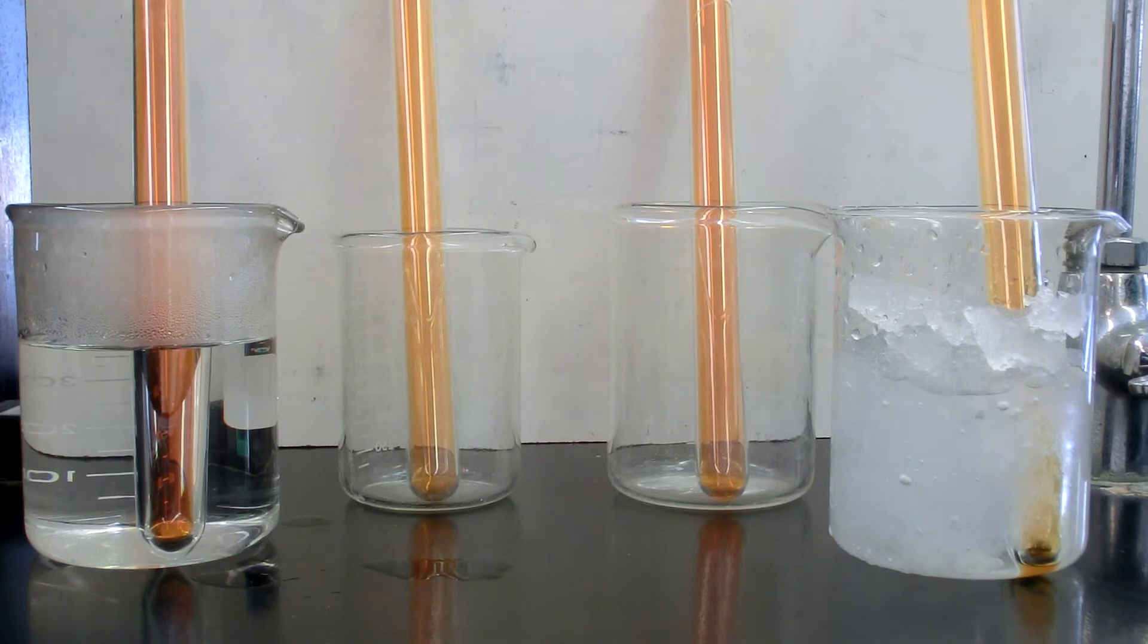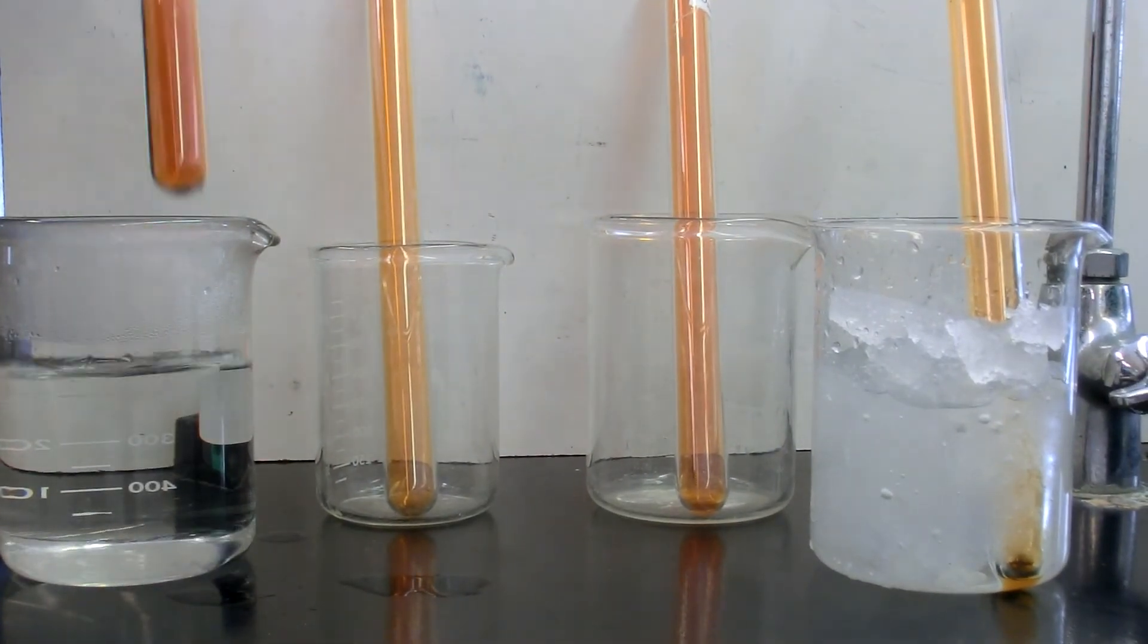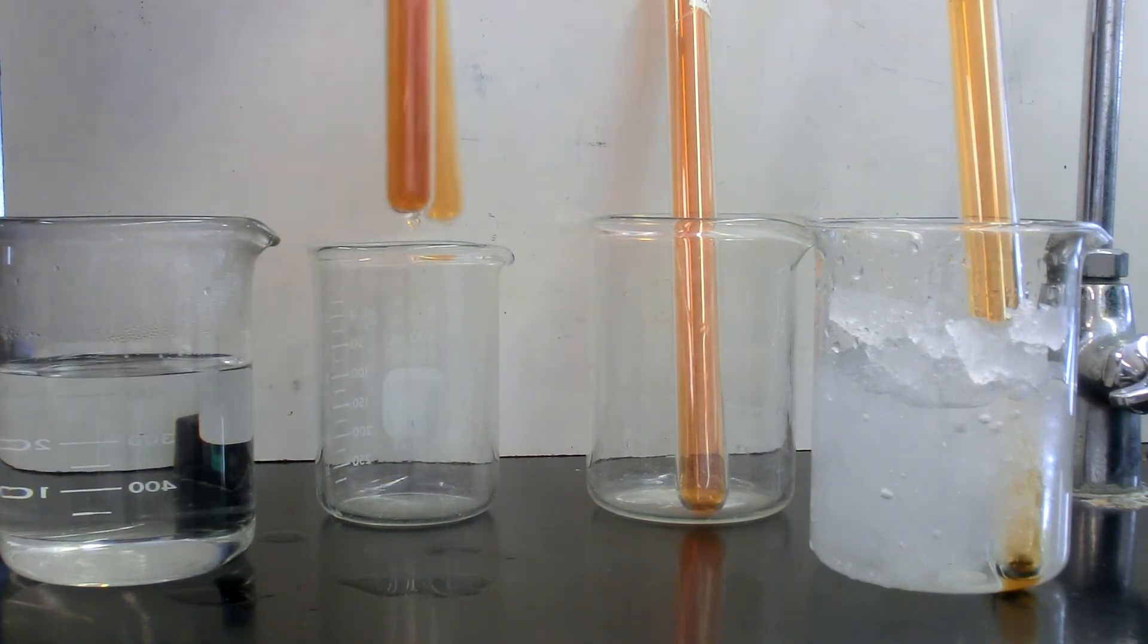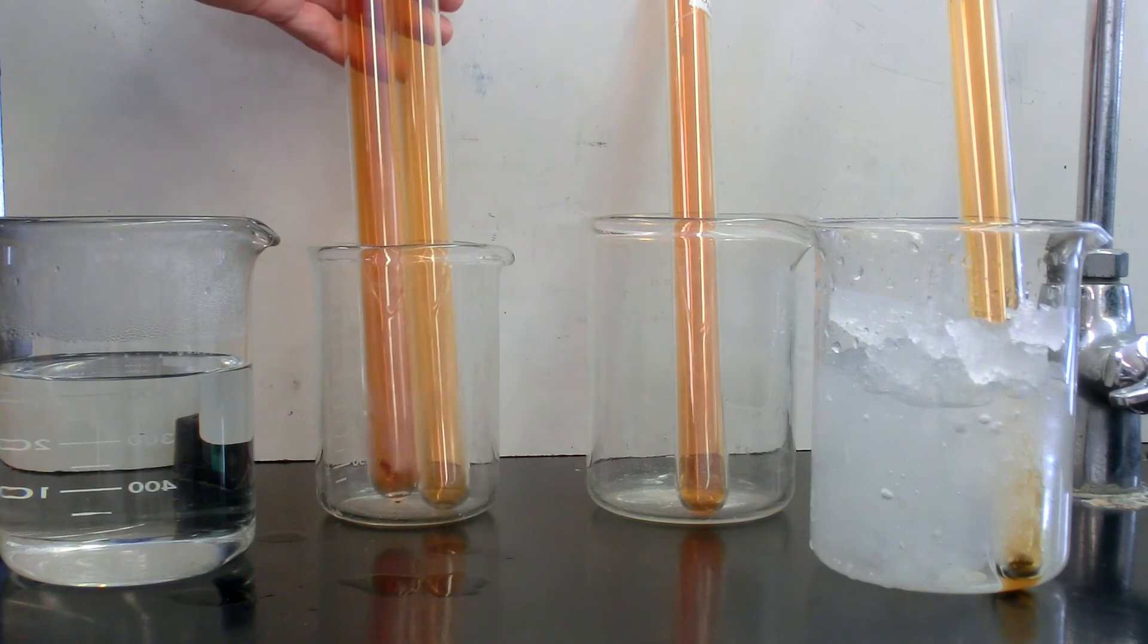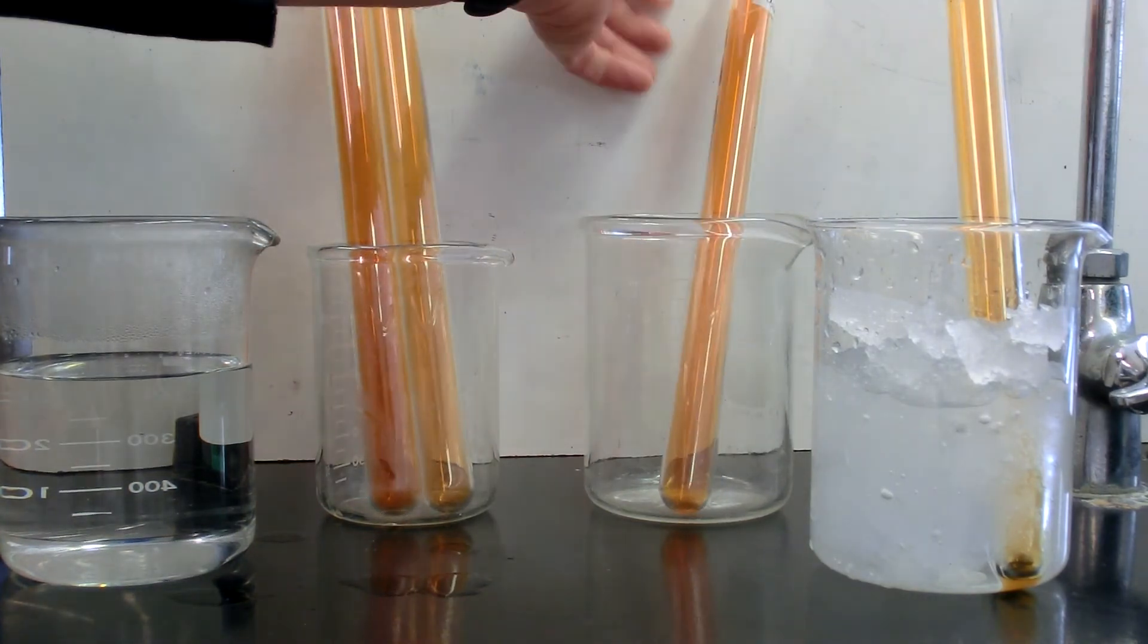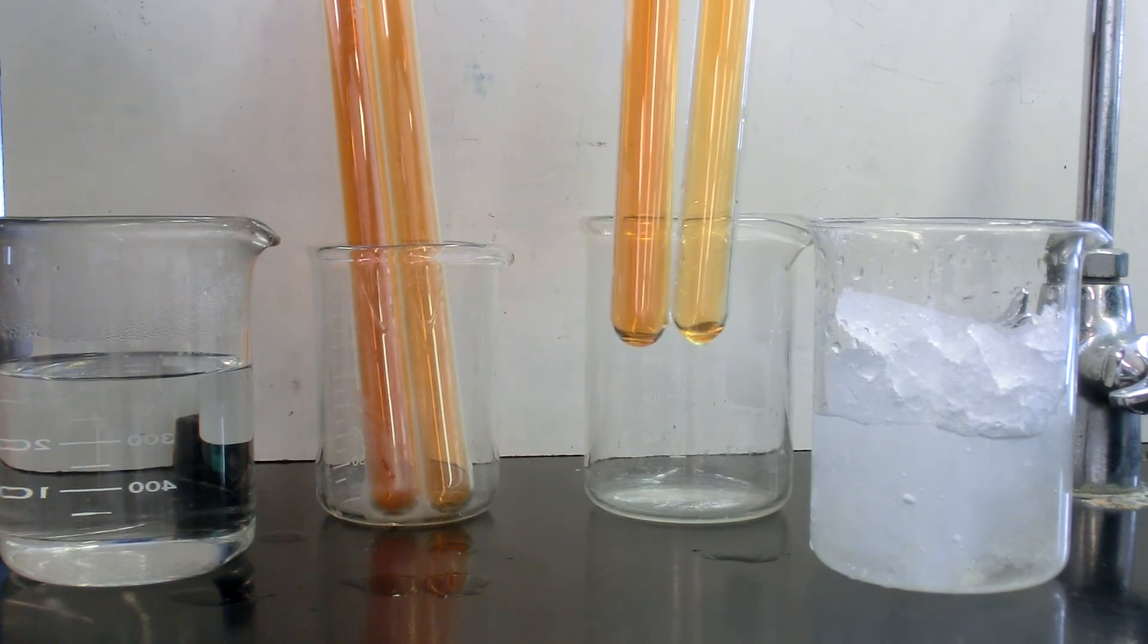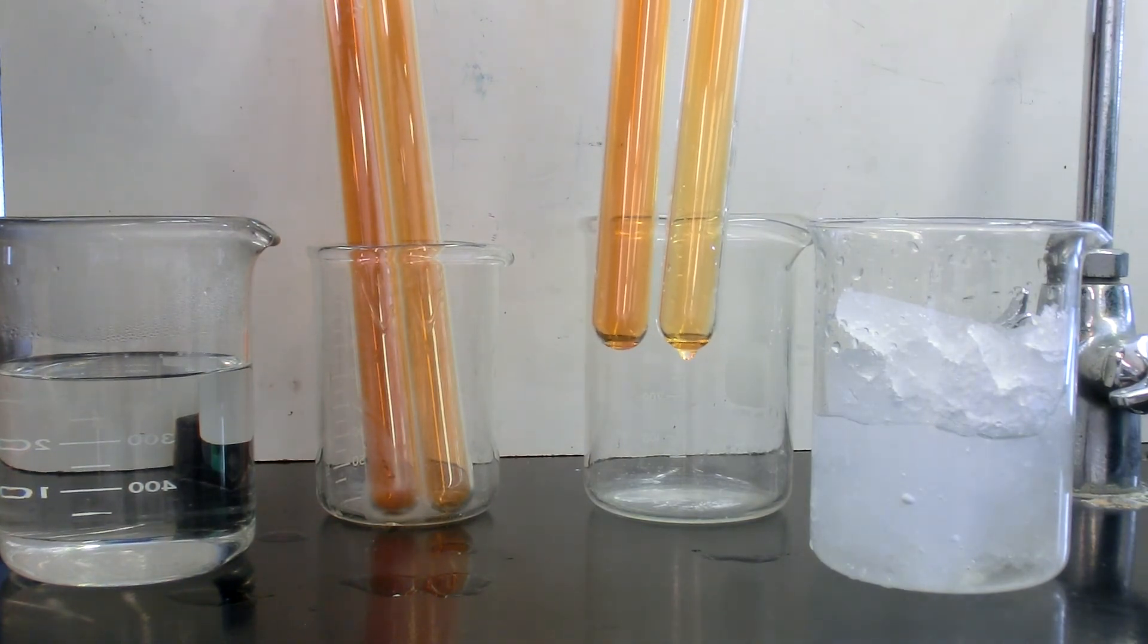All right, so surprisingly it actually didn't take that long. You'll notice that with the hot water container compared to the control there is a darker color in the hot water. And then if we look at the other varieties, you'll notice that in the ice bath it became a lighter brown compared to the control.